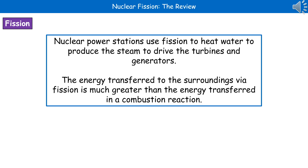The energy transferred to the surroundings via fission is much greater than the energy transferred in combustion reactions. Where we're talking about coal power stations, for example, that's a combustion reaction. So by using the same mass of a fissionable material, we generate much greater amounts of energy than by burning the same mass of coal.